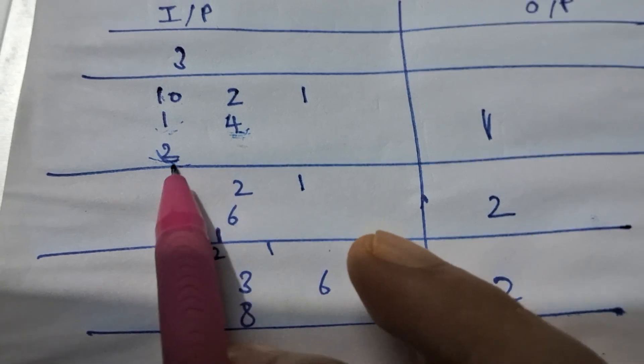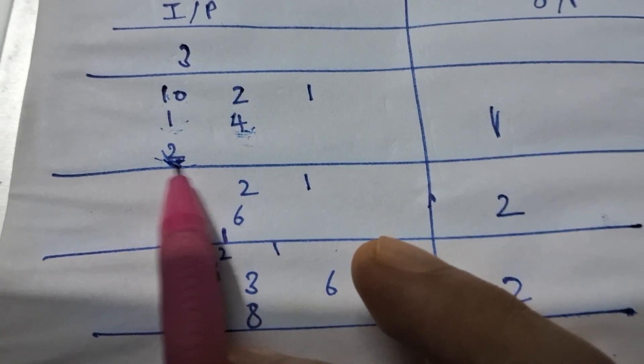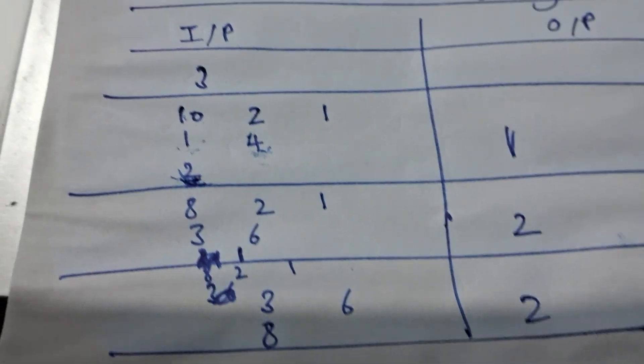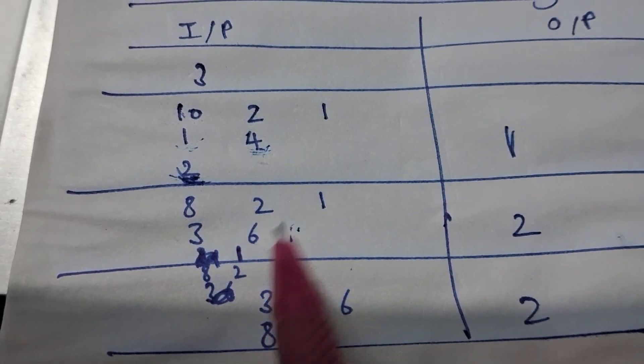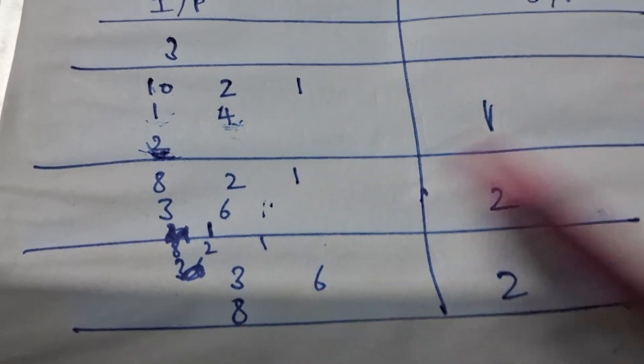There are two people at these cells respectively and there is one person over here. So these two people are going to search for this person, and what this person can do is he can either stay at one position or move to any of the adjacent cells.